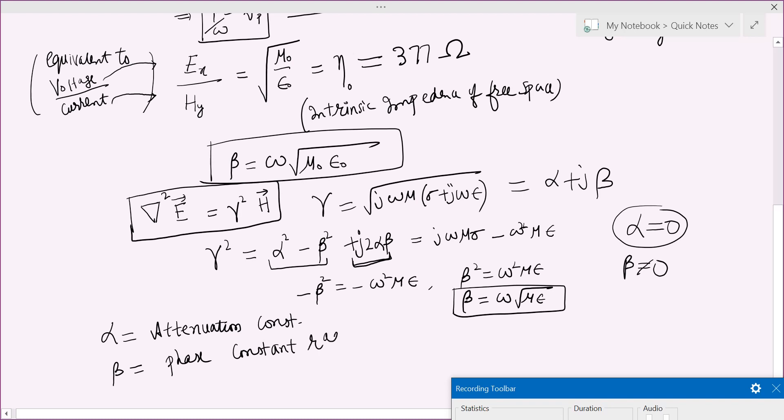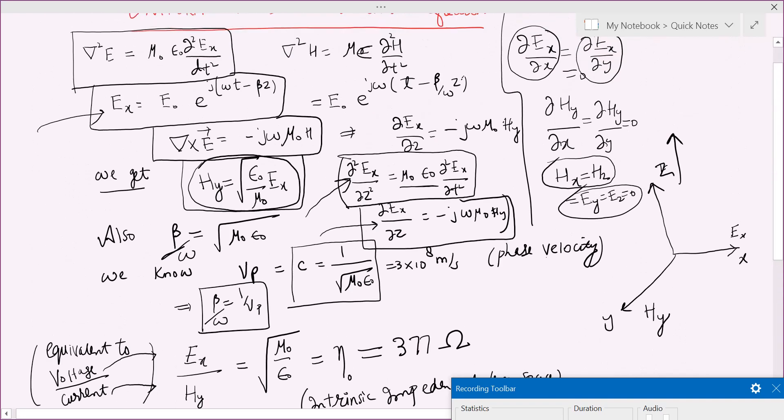Radians per meter. And you can see the relationship also. This beta is related to, you can write, omega by V_p. Okay, omega is angular frequency and V_p is the phase velocity.